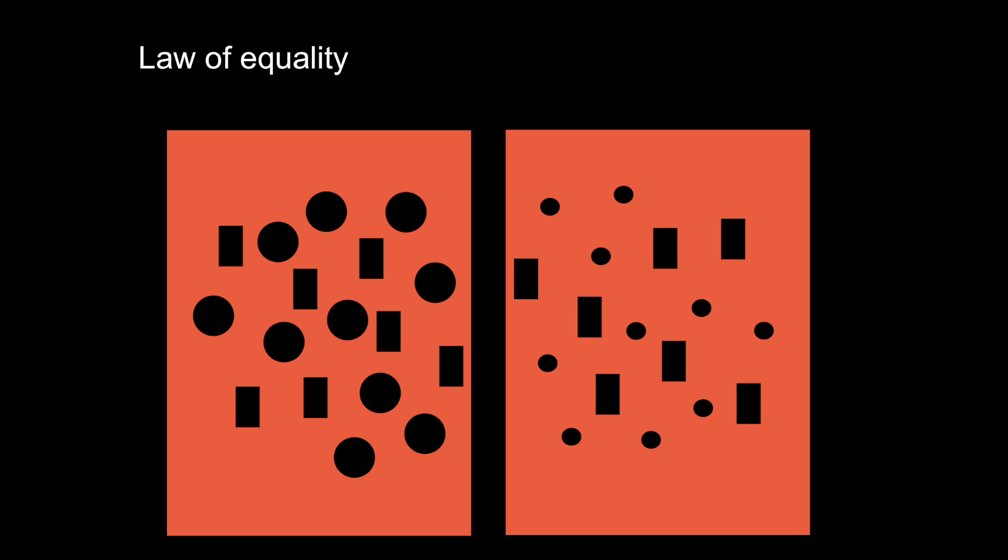On the left, we tend to group the circles together and the rectangles together, but neither one is particularly dominant over the other. On the right, the rectangles are a more obvious group and dominate over the circles.